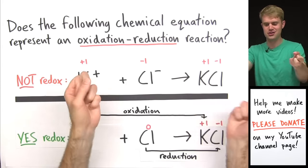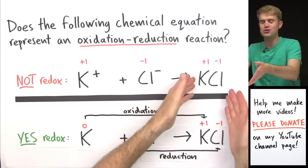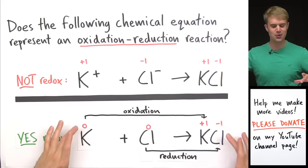This equation wasn't a redox reaction because there was no transfer of electrons. Two things that started out as +1 and -1 just stuck together. They were still +1 and -1 at the end.